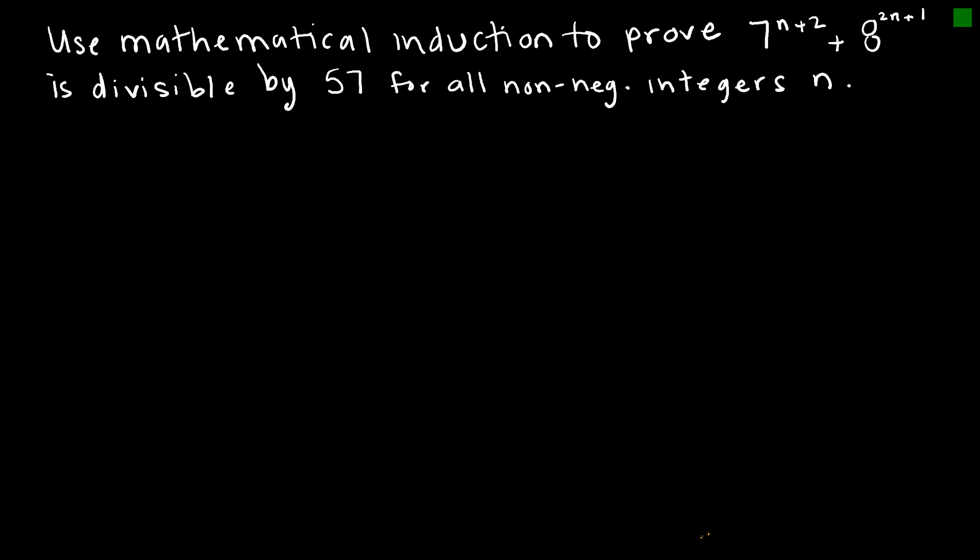Let's start by looking at a divisibility example. In this example, I'm trying to prove that this expression is divisible by 57 for all non-negative integers n. So I will start by saying that let P(n) denote that 7^(n+2) + 8^(2n+1) is divisible by 57.